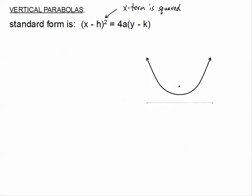There's a big relationship to understand between all the pieces of our parabola. We have our vertex — that's usually the first point we're going to find. The distance from the vertex to the focus is exactly a units, and the distance from the vertex to the directrix is also exactly a units, because the vertex is exactly halfway between the focus and the directrix.